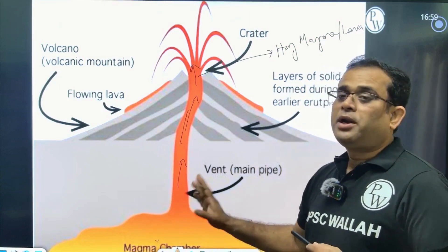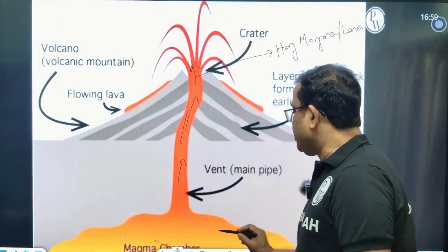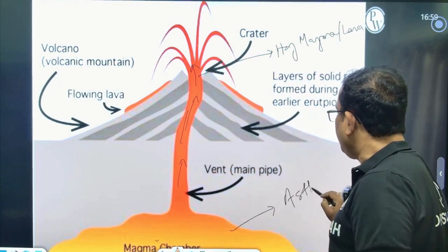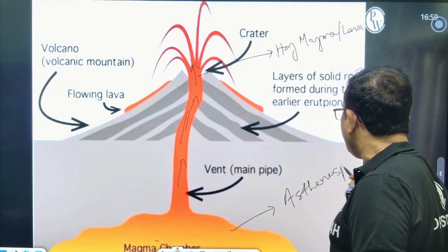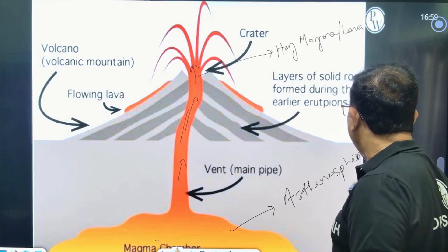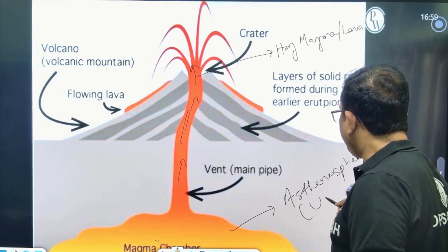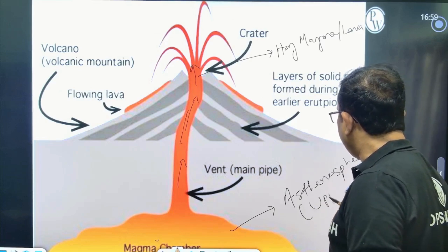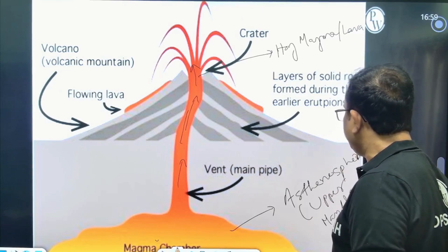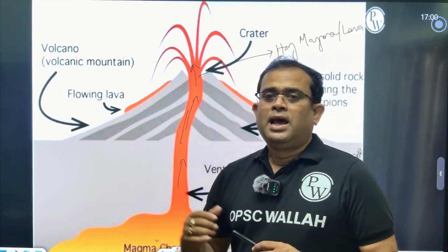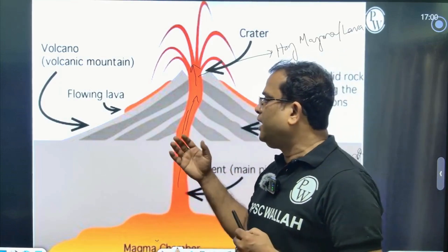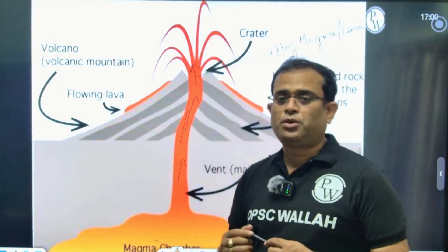This magma chamber is in the asthenosphere. The asthenosphere is located in the upper mantle.